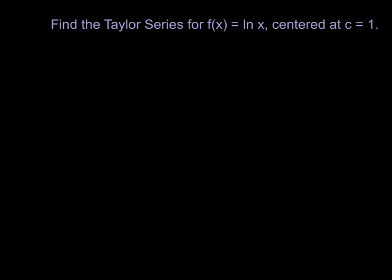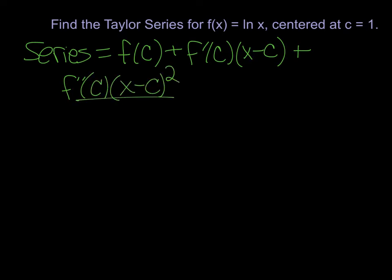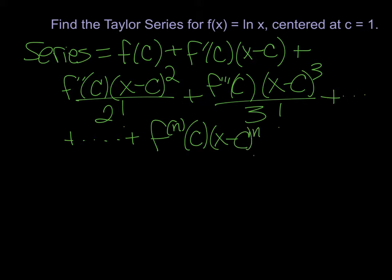So let's look for the general Taylor series for ln of x centered at c equals 1. Recall that the formula for the Taylor series is very similar to the Maclaurin series, but a little messier. We evaluate our function at our point c, which is not necessarily 0, plus f prime of c times x minus c, plus the second derivative at c times x minus c squared over 2 factorial, plus the third derivative at c times x minus c cubed over 3 factorial. The general term is the nth derivative at c times x minus c to the n over n factorial.